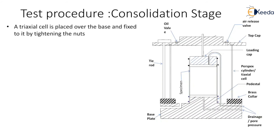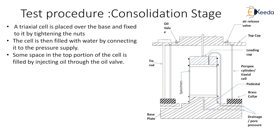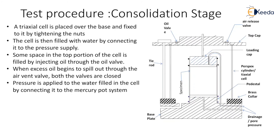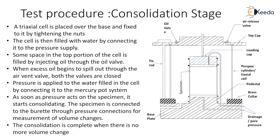The triaxial cell is placed over the base and fixed by tightening the nuts. The cell is then filled with water by connecting it to the pressure supply. Some space in the top portion of the cell is filled by injecting oil through the oil valve so that leakage of water from the ram area can be prevented. When excess oil begins to spill out through the air vent, both valves are closed. Pressure is applied to the water in the cell by connecting it to the mercury pot system. The specimen starts consolidating and is connected to the burette for measurement of volume changes. Consolidation is complete when there are no more volume changes.